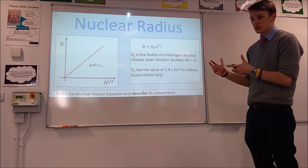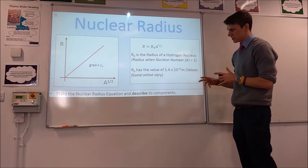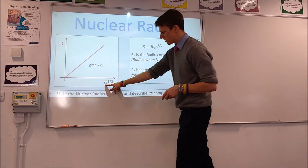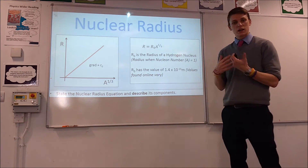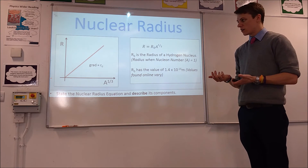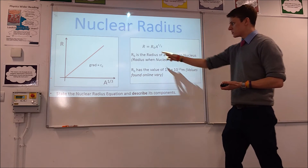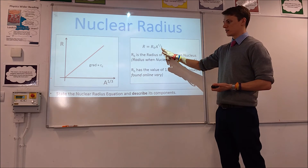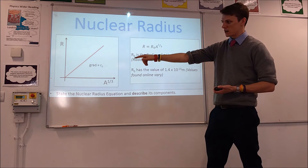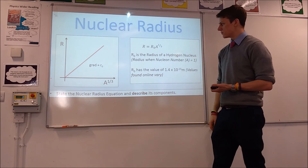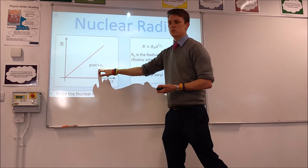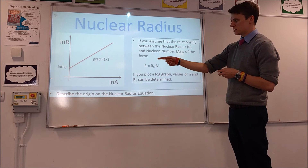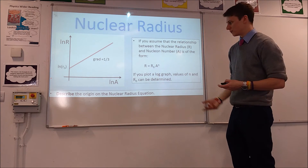What you typically see in textbooks is actually a graph where you plot the radius against the nucleon number to the power of a third, because that gives you a straight line graph — since the radius is directly proportional to A to the one-third. That's what you can see: a straight line graph going through the origin. In this case, the gradient would be R₀. So that's the graph you'd usually see, but the log-log graph is where those values actually come from.